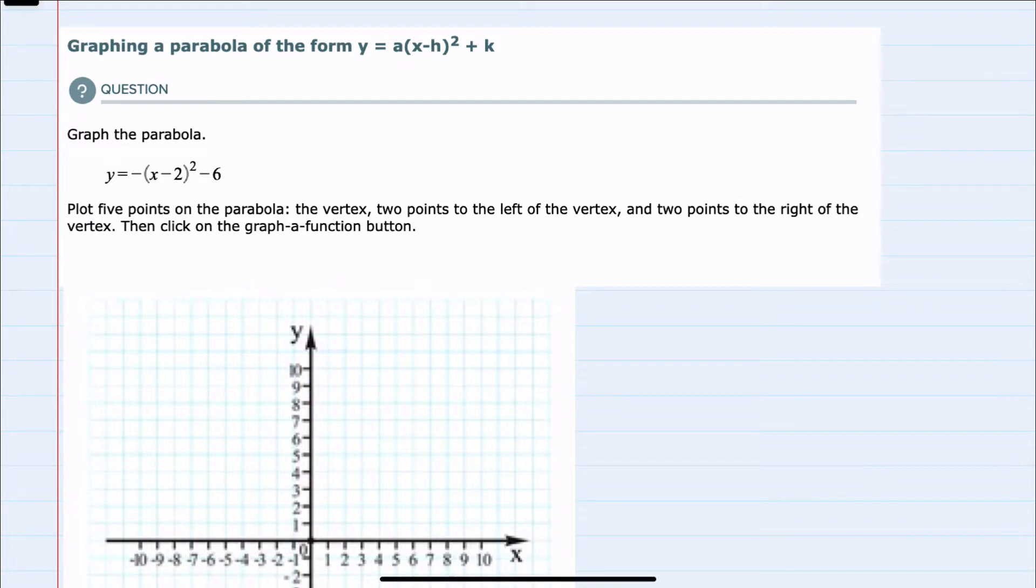We're given our parabola here y equals negative x minus two quantity squared minus six and we're asked to graph by finding five points: the vertex, two points on the left, and two points on the right.